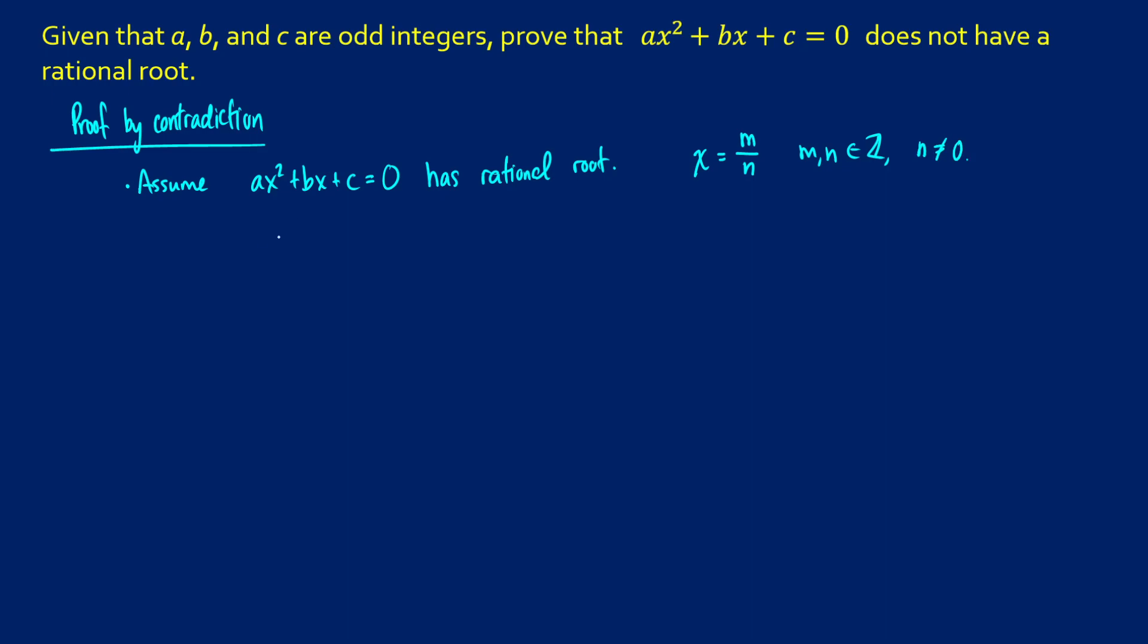So what this means is that we can rewrite this as a times m over n squared plus b times m over n plus c is equal to 0.